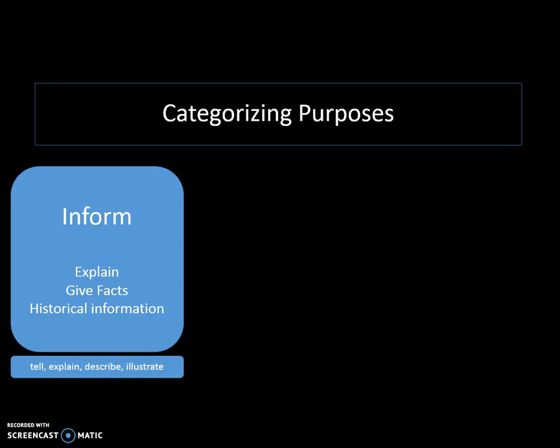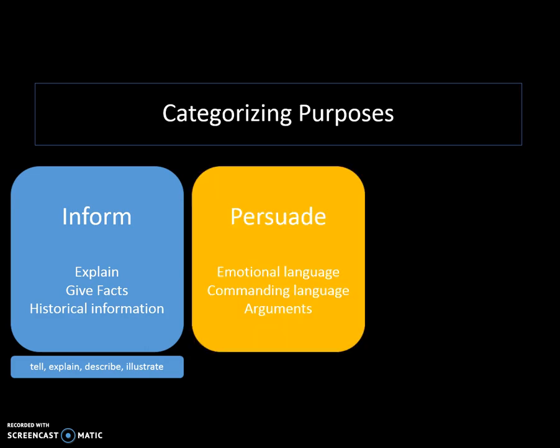Another big idea I use to categorize what I read is persuasion. When the author's purpose is to persuade you, they typically will use an emotional appeal or emotional language. They'll use commanding language asking us to do certain things, or arguments supported by evidence that may be one-sided or not well balanced. The author is trying to convince us to feel, act, or think a certain way about the topic, and this is very common in nearly all types of reading material.